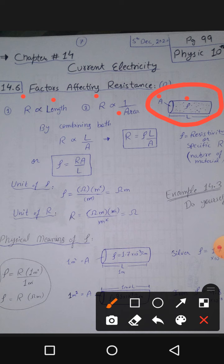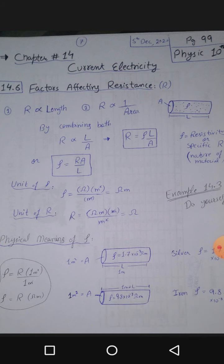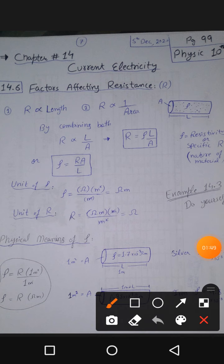If the diameter of the conductor wire is greater, you will have less resistance — meaning charges will find it easier to pass through. Less resistance means less obstruction for current to flow. If the area is larger, particles and charges can pass through easily, so resistance is less and current is more. Combining both these relations — resistance is directly proportional to length divided by area.